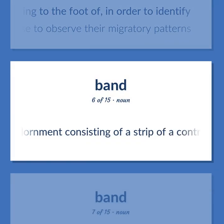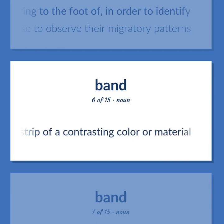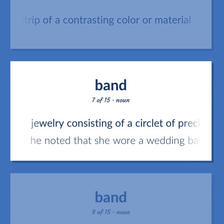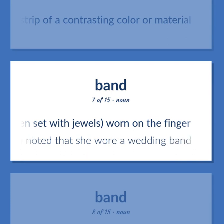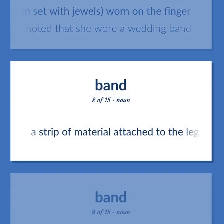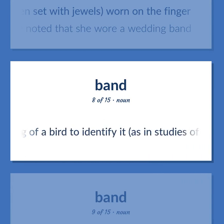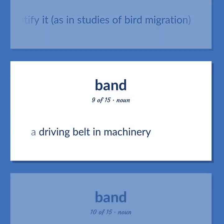An adornment consisting of a strip of a contrasting color or material. Jewelry consisting of a circlet of precious metal, often set with jewels, worn on the finger. He noted that she wore a wedding band. A strip of material attached to the leg of a bird to identify it, as in studies of bird migration. A driving belt in machinery.